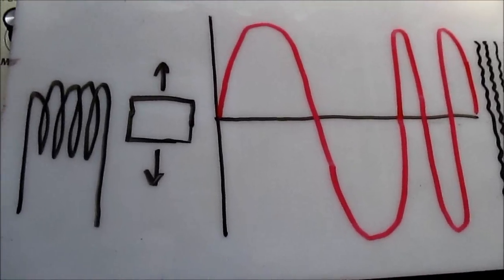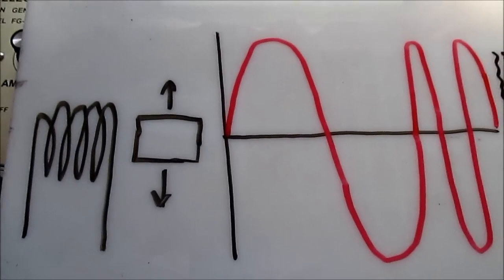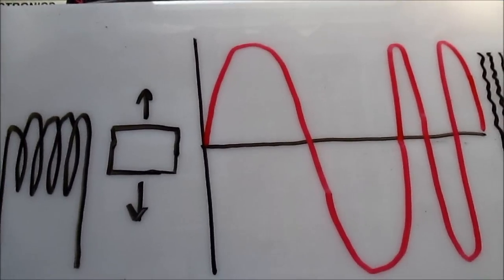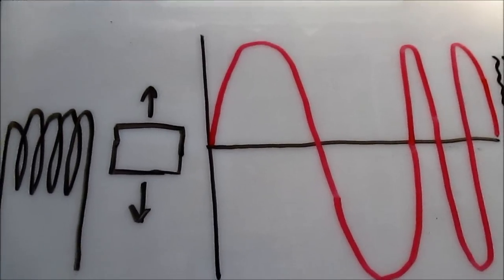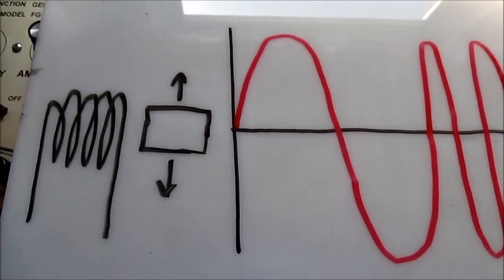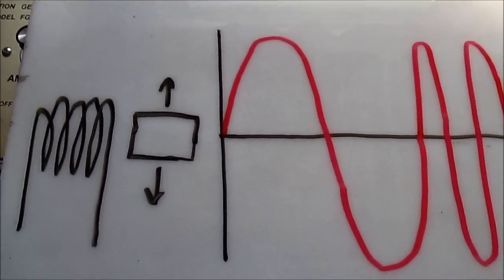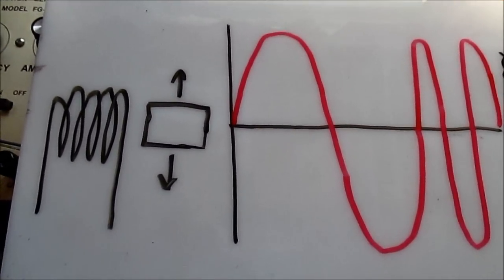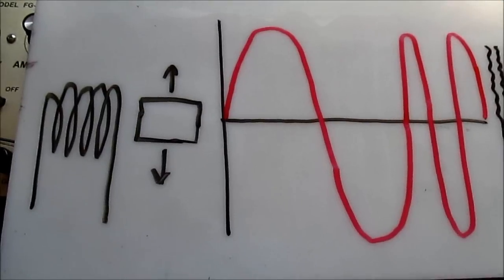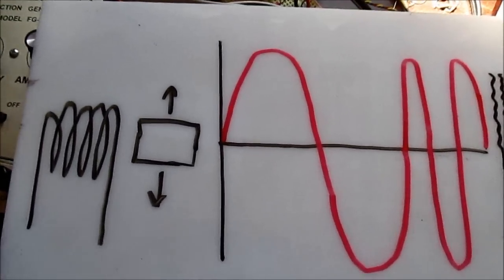So why do we need a phono preamp anyway? Well, there's a couple of reasons. For one, the signal coming off of the phono cartridge is very weak and to get it up to line level, it needs amplification. Number two, for a multitude of reasons, there is a curve applied to the frequency response. It's not flat off the record and there's a multitude of reasons why they do that. And I'm not going to explain everything in the video, that's a 30-minute subject on its own.